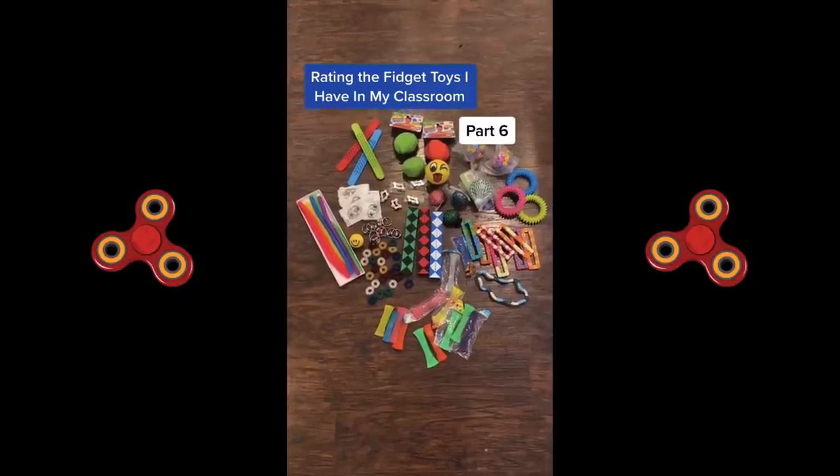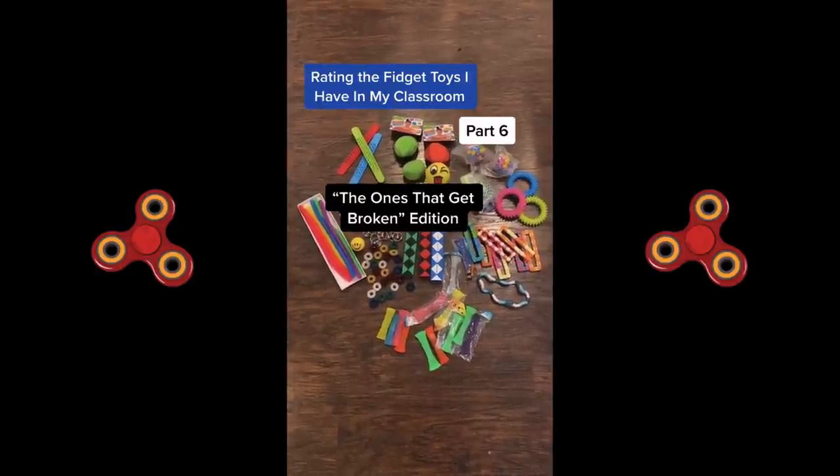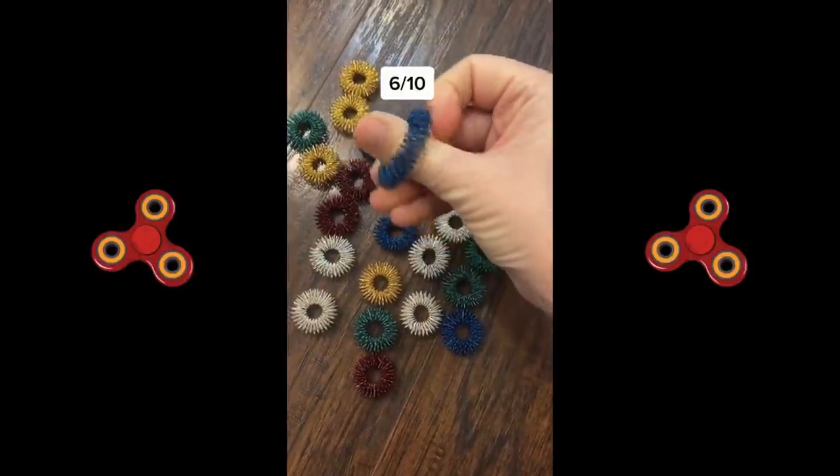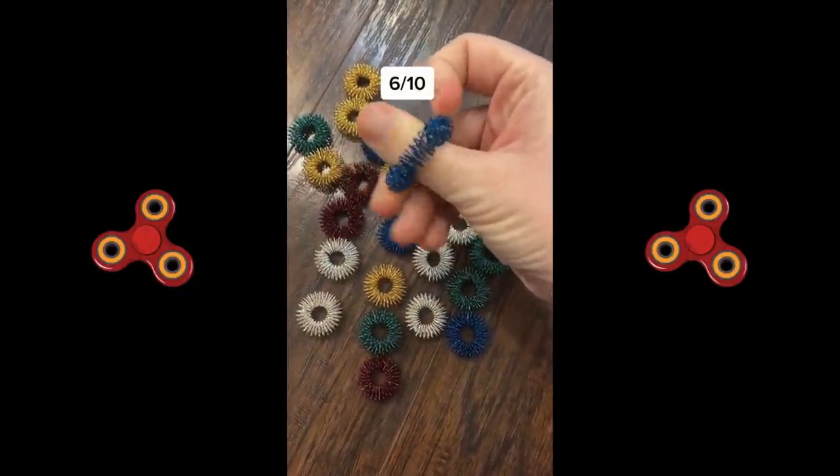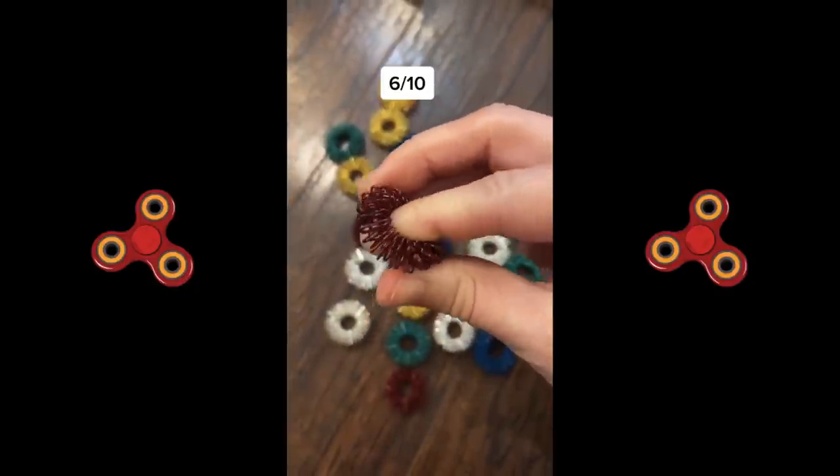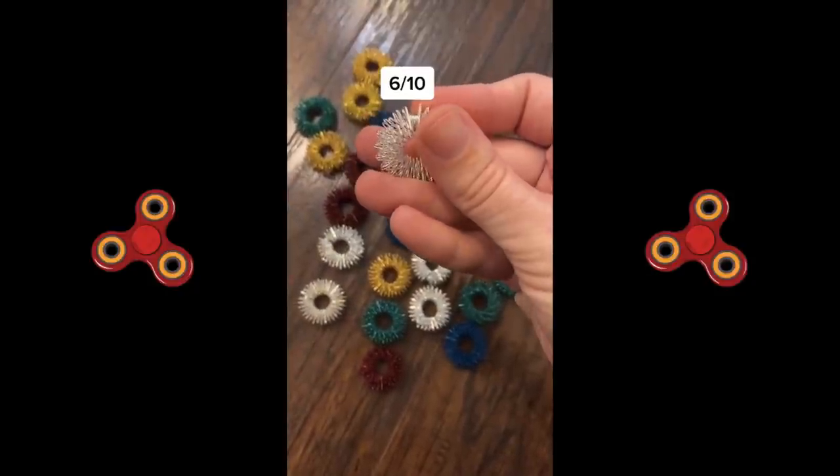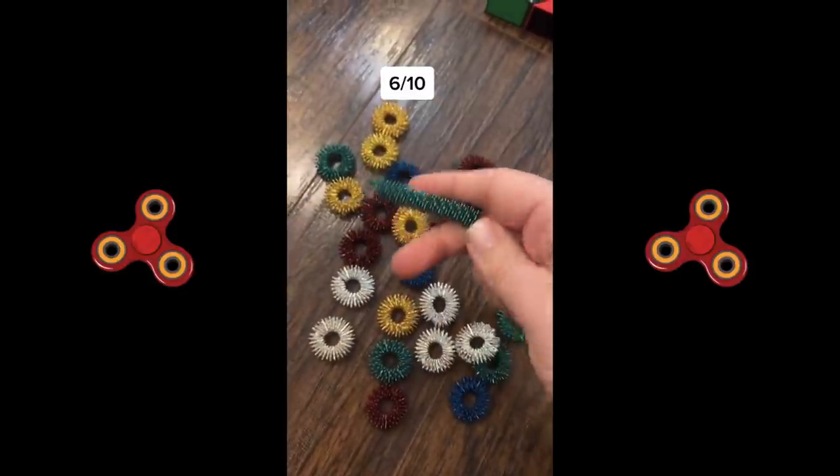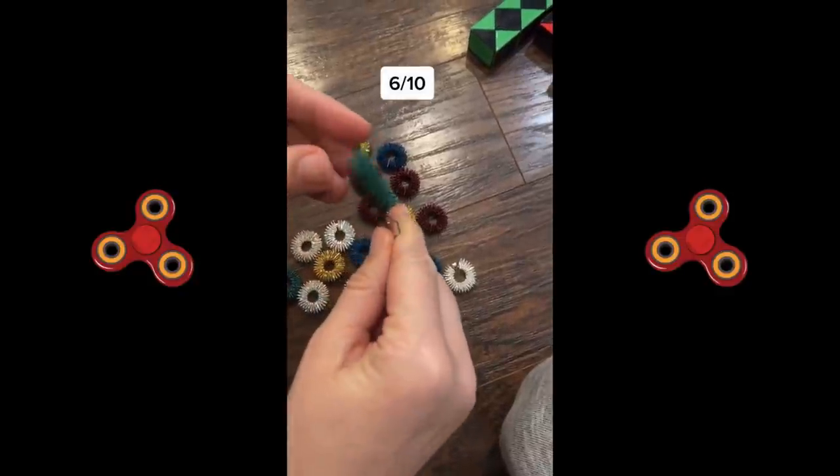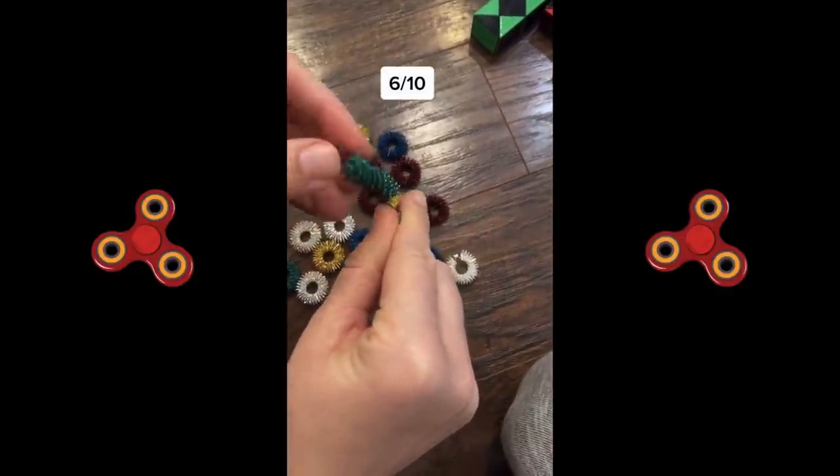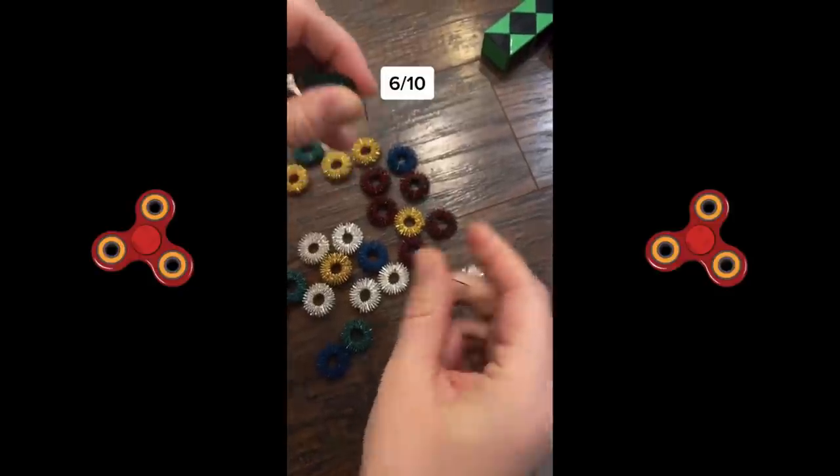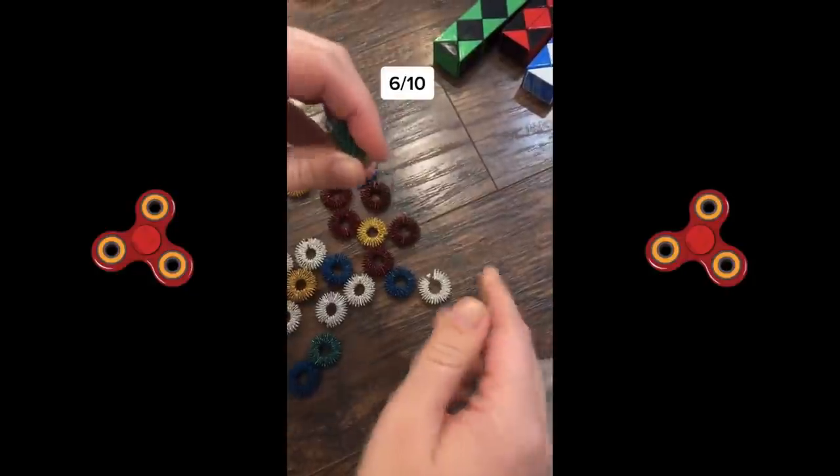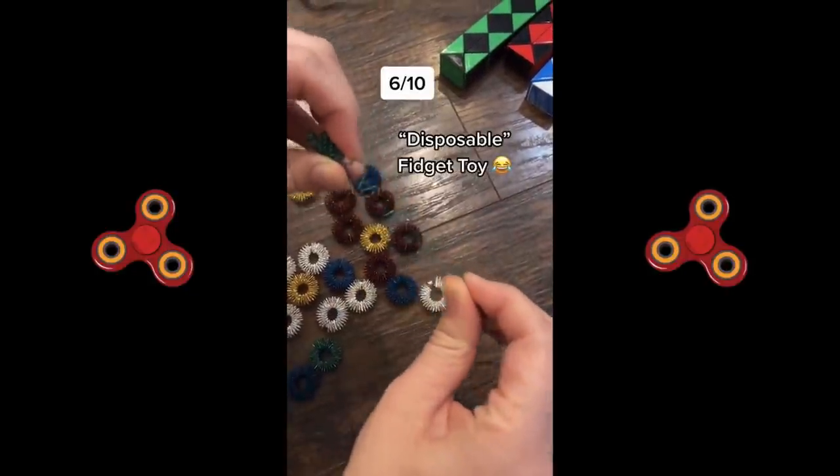Rating the fidget toys I have in my classroom. The ones that get broken edition. So I know everyone prefers different things, but I personally do not like these ones at all. They're metal and they honestly hurt me. I don't know if you can see where they connect right here, but my students can pop that apart really easily. Then they look like this. They basically create another fidget toy, which is cool. Then they pull the metal apart little by little like this. And once it's all pulled apart, I just throw them away. So they're basically like a disposable fidget toy.